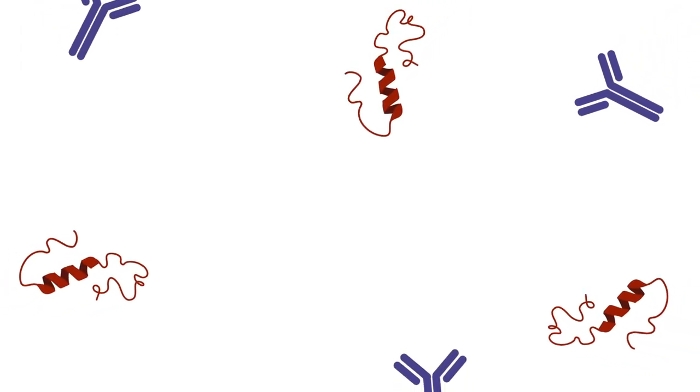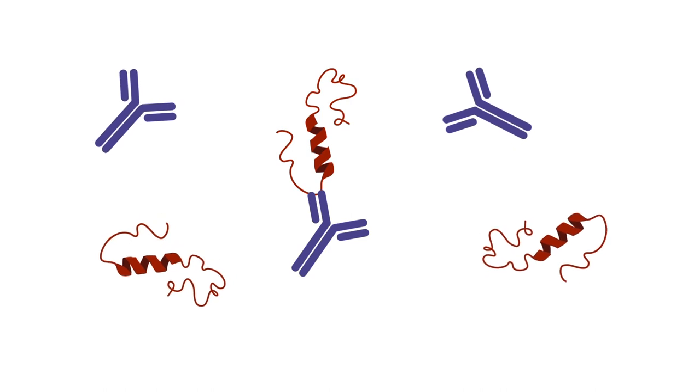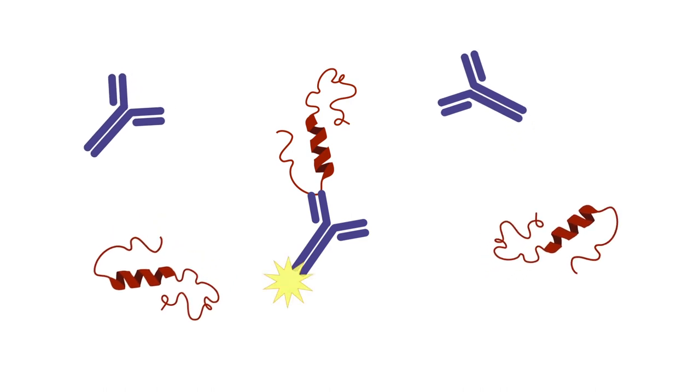One way to potentially halt this process is to use antibodies that recognize beta-amyloid. The antibodies bind to the protein and signal to the immune system to clear it out.